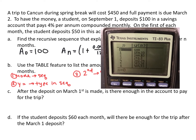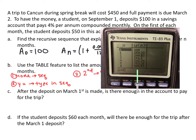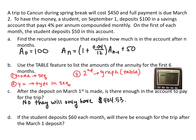So this is what your table should look like. Month 0, there was $100. Month 1, there would be the $50 deposit plus the interest — about 33 cents — and then every month out to month 6. So this would be September 1st, October 1st, so on and so forth. After the deposit on March 1st — September, October, November, December, January, February, March — there's $404.53 in the account. Since they need $450, the student doesn't have enough money. So no, they will only have $404.53.